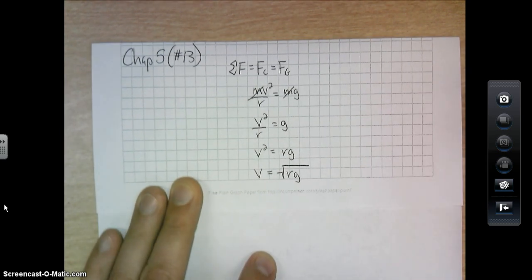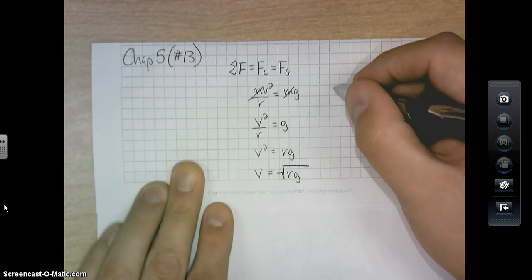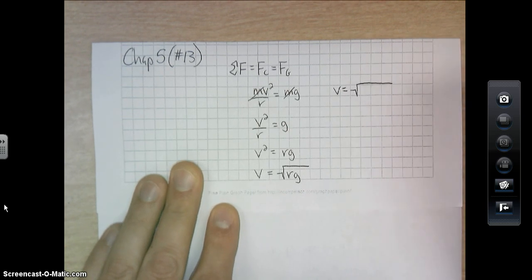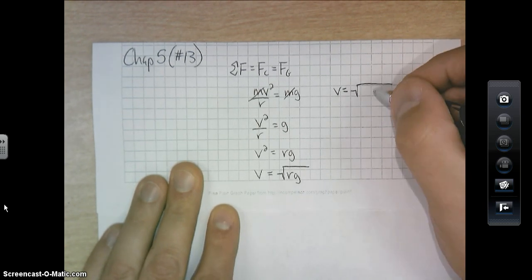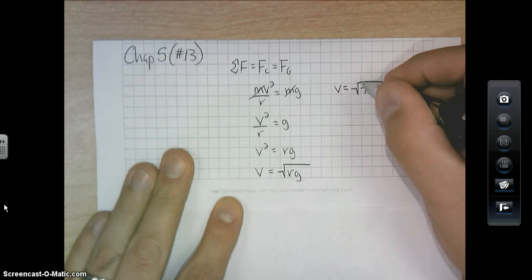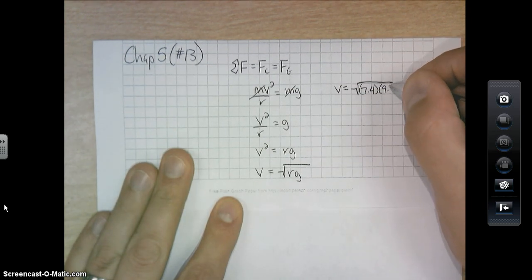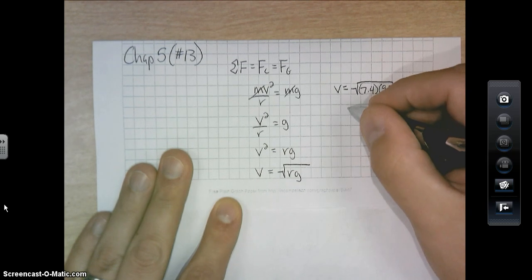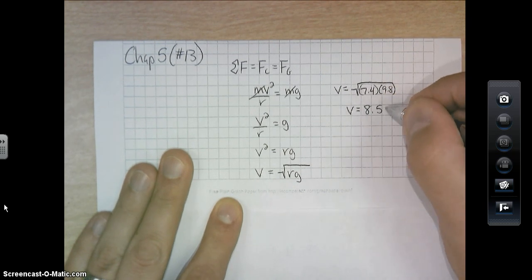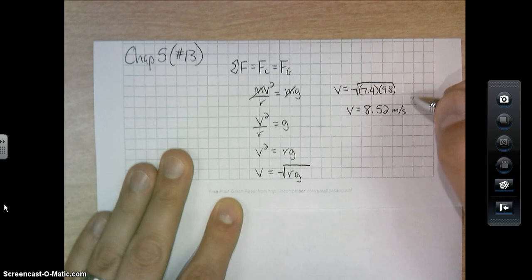And in the problem, they gave us the radius. So then the minimum speed required would be the square root of the radius, which was 7.4 times gravity, and you end up with a minimum velocity of 8.52 meters per second squared.